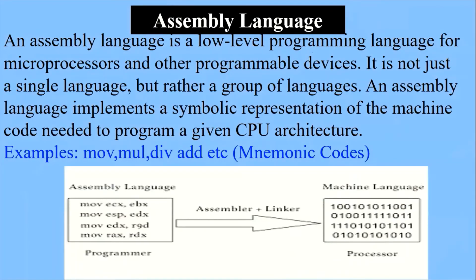There is another type of language, and that is called assembly language. Assembly language is a low-level programming language for microprocessors and other programmable devices. It is not just a single language but a group of languages. Assembly language implements a symbolic representation of machine code, using different symbolic characters in place of machine code, because machine code is not easy to understand.